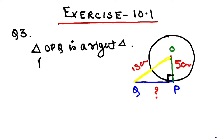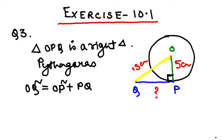I can apply Pythagorean theorem. If we apply Pythagorean theorem, OQ² = OP² + PQ². So OQ² will be 169 and OP² will be 25. We have to find the value of PQ.